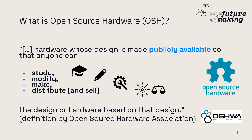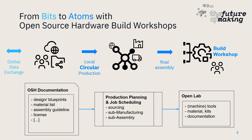A quick recap on open source hardware: the four main characteristics from the Open Source Hardware Association are the right to study, to modify, to make, and to distribute. We want to focus on the 'study' and 'make' attributes here — from bits to atoms with build workshops. When we have open source hardware, we have a global data exchange.